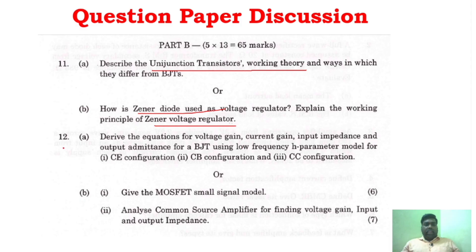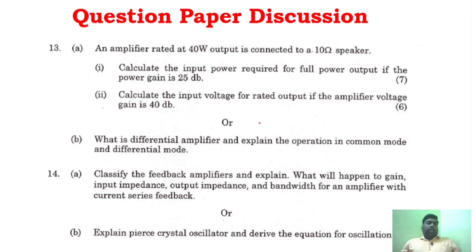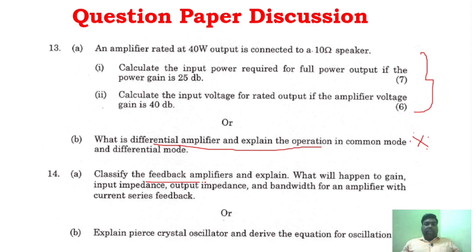In part B, you can see this question paper contains theory questions. Looking at unit 2 in the question paper, there is CE, CB, CC configuration, BJT H-parameter model, and MOSFET small signal model — where you have to analyze a common source amplifier for voltage gain, input impedance, and output impedance. For unit 3, you can see a differential amplifier problem, which is a very, very important question. Unit 5 has a buck-boost question, and unit 4 has feedback amplifier questions.